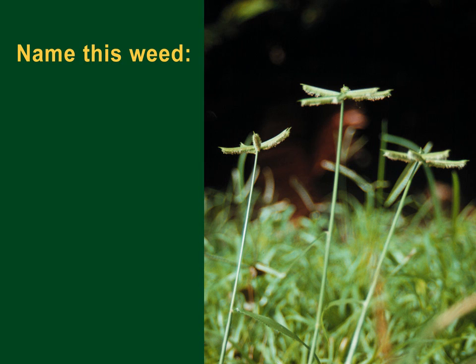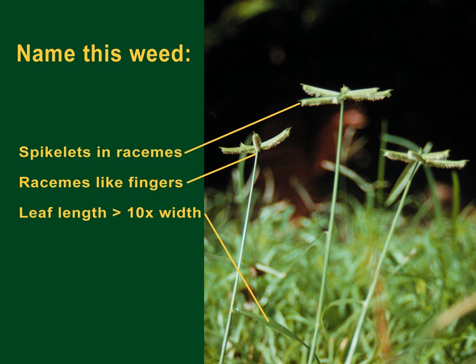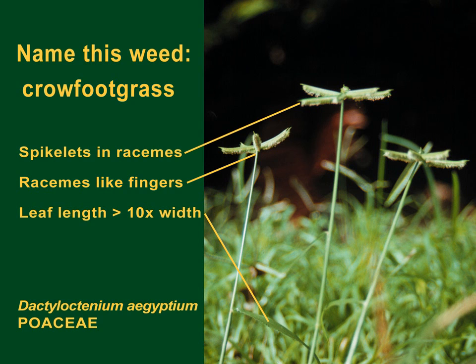You have certainly seen this weed — it seeds prolifically in the summertime. Looking at its parts, this plant's leaves are ten or more times as long as wide, meaning it's possibly a grass or a sedge. It has inconspicuous flowers in spikelets contained in comb-like racemes, arranged like the fingers of one's hand, all coming from the same point. This is crowfoot grass.